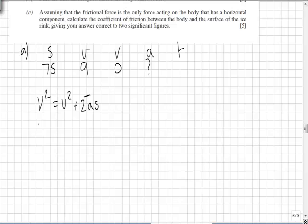Substituting in, we can immediately see we have zero squared, that's zero, equals 9 squared plus 2 times A times 75. 2 times 75 is 150, so we have 150A equals minus 81, that's the 9 squared.